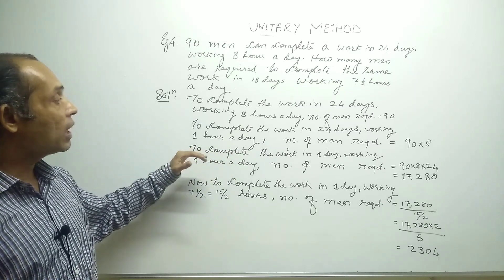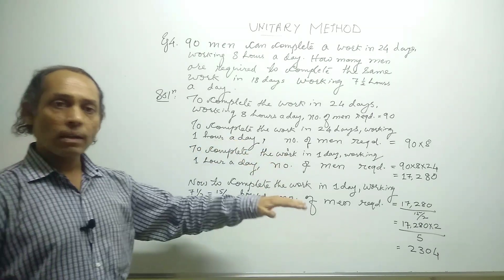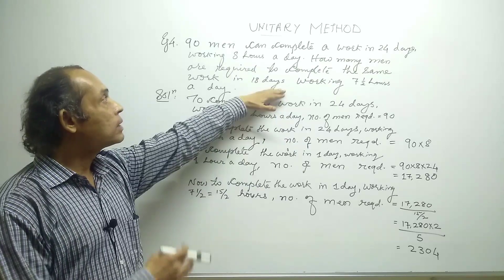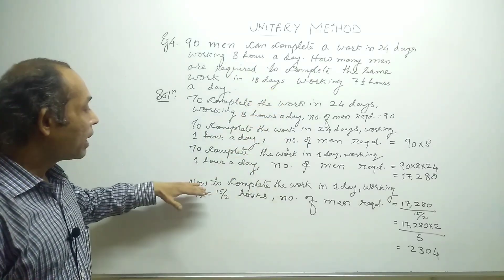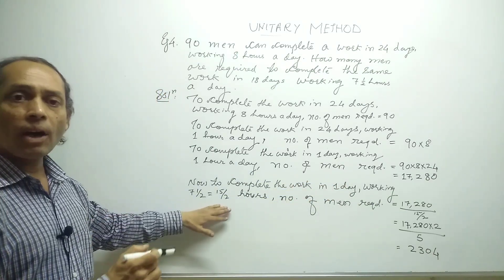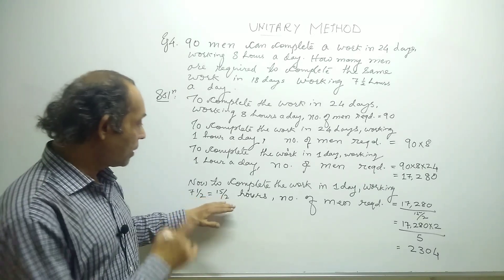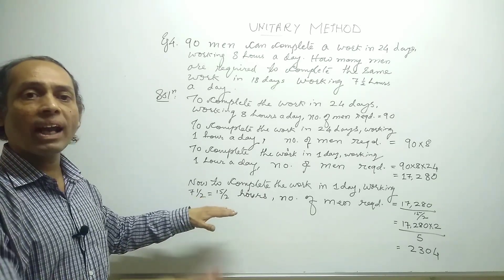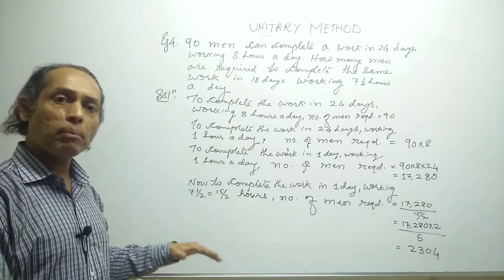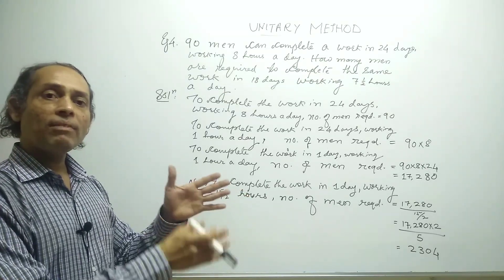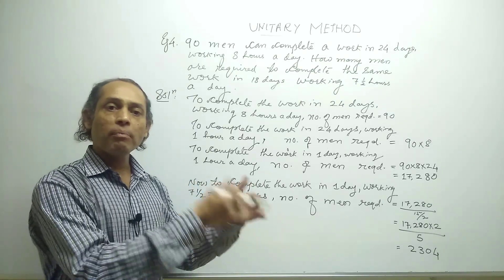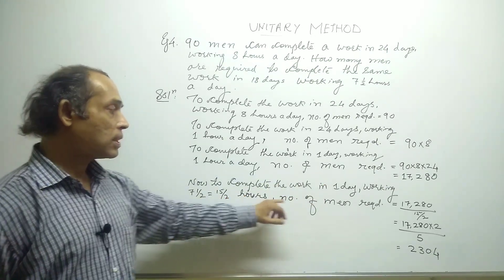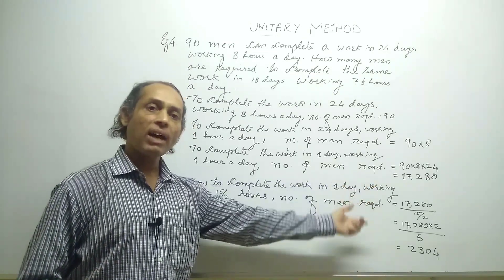So 17,280 men are required to complete the work working only one hour a day. Now, to complete the work in one day working seven and a half hours — going from one hour to many hours — we divide, because giving more time means fewer men are needed. For seven and a half hours, that is 15 by 2 hours, the number of men required is 17,280 divided by 15 upon 2.